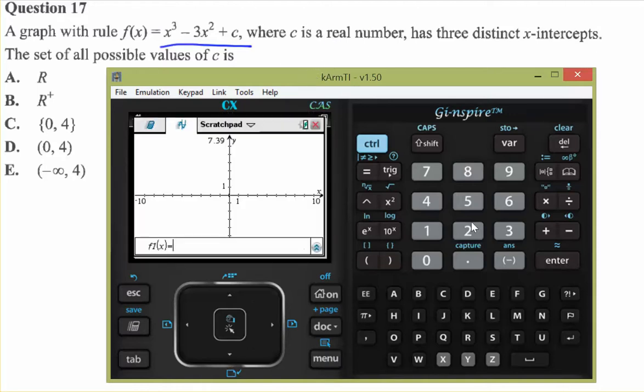So if you go to a graphing page, and let's enter our function, x cubed minus 3x squared plus c, we get nothing because we have not told the calculator what c is.